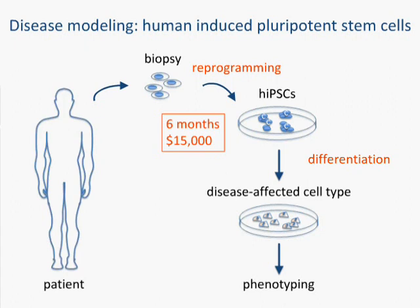Moreover, once you've differentiated the cell into the affected cell type, you're always confronted with: what do you compare this to? What is the control cell line? Is it just a cell line from another individual that does not have the disease, or is it from a brother or sister who's unaffected, or perhaps the mother or father who's unaffected?